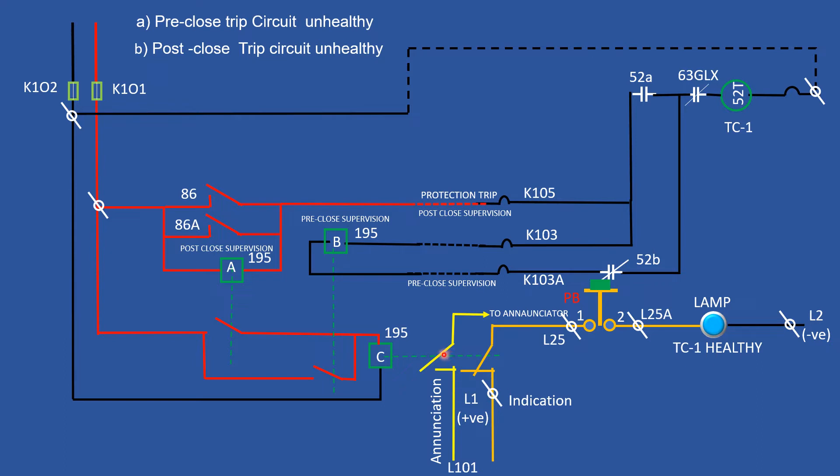We only watch the process of checking unhealthiness of trip coil through indication lamp circuit. Here, the supervision relay is in series with a push button and 195c relay contact. If trip circuit remains healthy, then the indication lamp will glow after pressing push button.